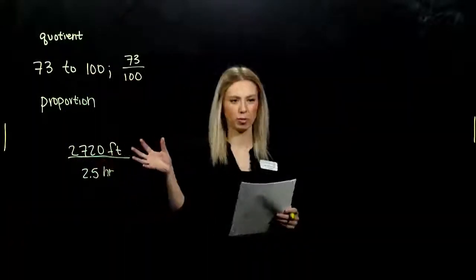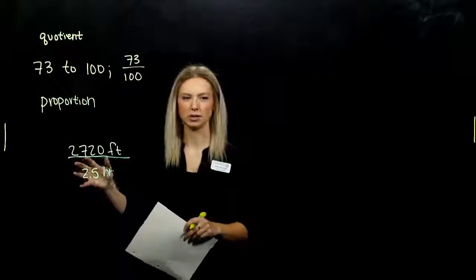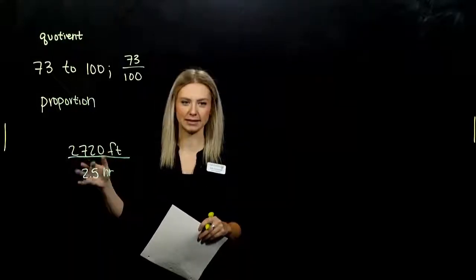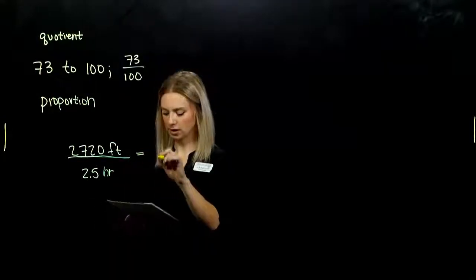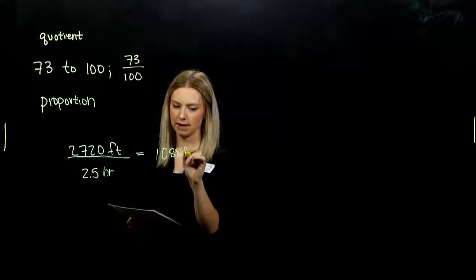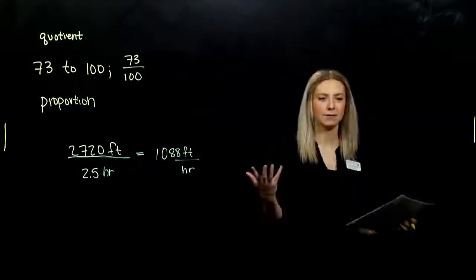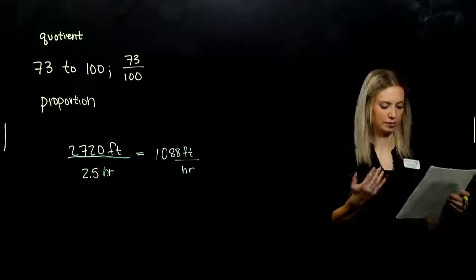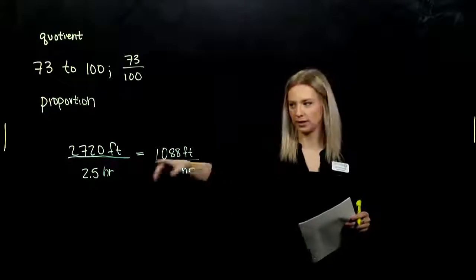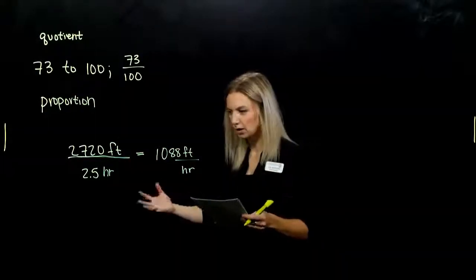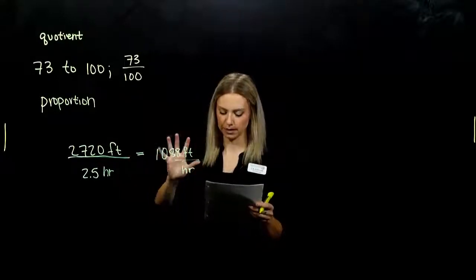But it feels unnatural to report a rate or speed per every two and a half hours. We usually want to unitize it and have it per hour. If we do that division, it actually comes out to be 1,088 feet per hour. So when we have an equality of ratios like this, it's called a proportion.